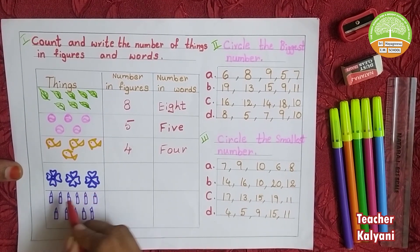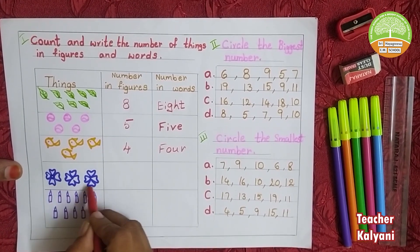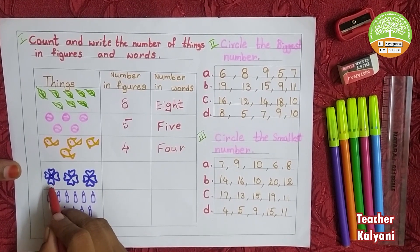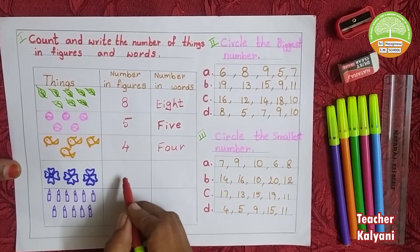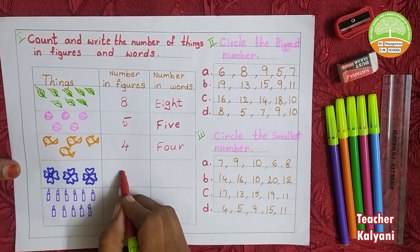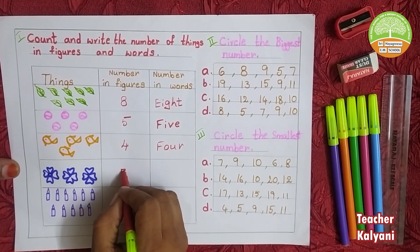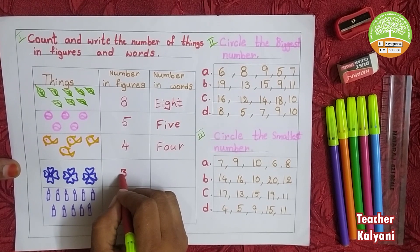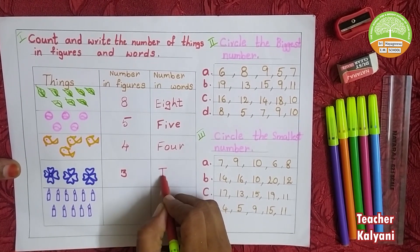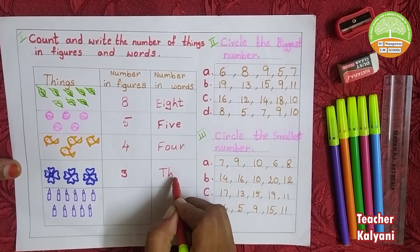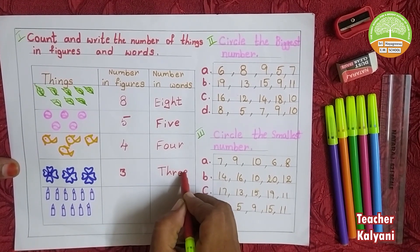Next one, we count flowers: 1, 2, 3. Number in word: T, H, R, E, E.